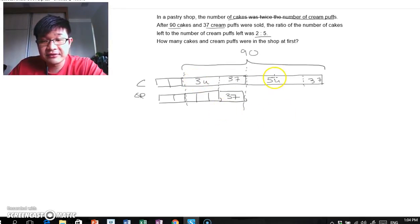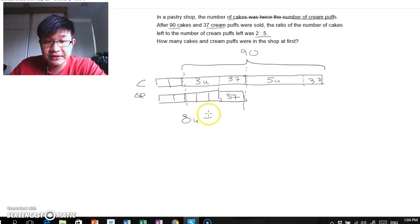3 units and 5 units make 8 units. 8 units and this 37 and 37 gives me 90. So therefore, 8 units would therefore be 90 minus 37 minus 37, with the answer being 16.